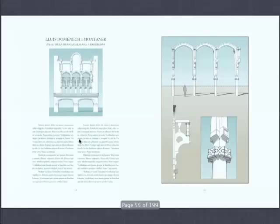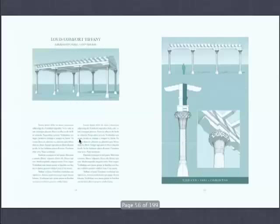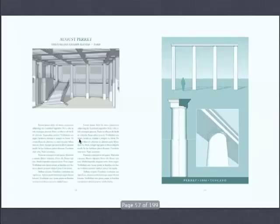Doménech i Montaner. Louis Comfort Tiffany — did you know that he actually did a classical order for his own house? It's Corinthian — a form of Corinthian closer to the nature of Laugier's primitive hut than you would have found. And Perret, an absolute dream with concrete — the elegance of Auguste Perret. We have three of his orders, and how he transitions and does everything minimally with consummate French elegance — he really comes out one of the great heroes.